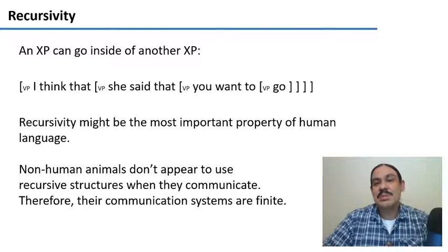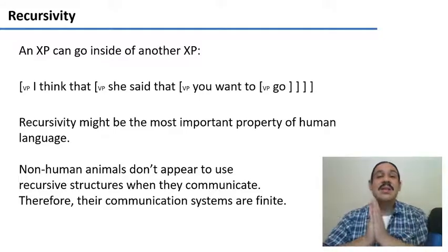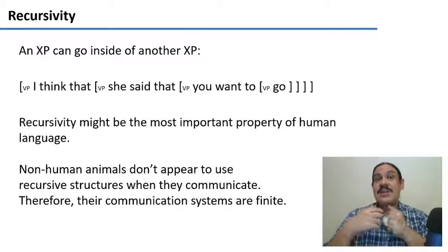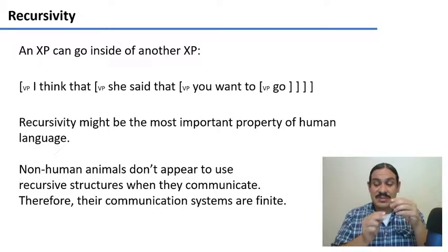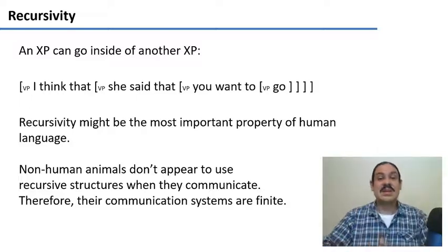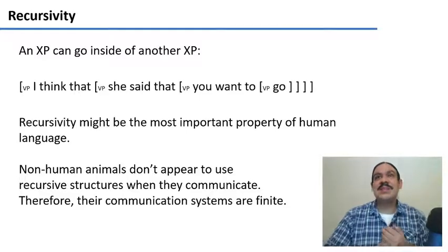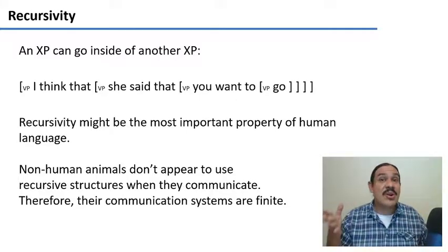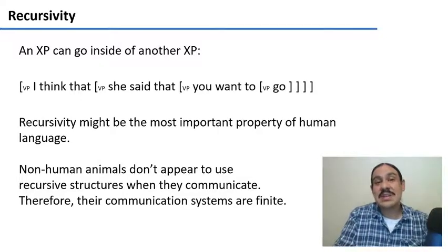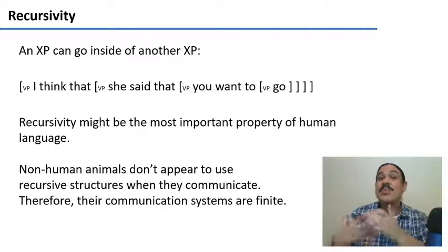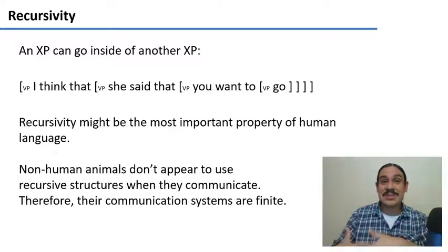Recursivity might be the most important property of human language, and it is in fact the main difference between human languages and the forms of communication of non-human animals. Other animals have very complex forms of communication, but none of their communication systems appears to have recursivity, where you can build elements inside of the same type of elements. Therefore, no matter how large their systems are, they're finite, and they don't have the infinite-like creative and generative power that our languages have. So recursivity is very easily explained by the structure of the rules that we have, and it is an important property of what makes our languages human languages.